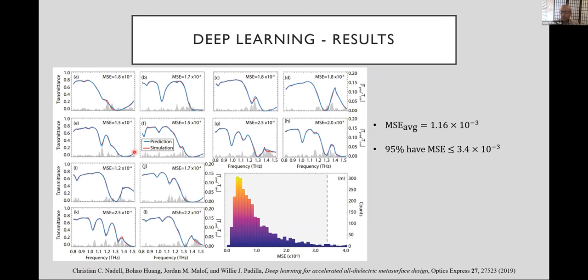Here are some statistics. We find overall that we have an average mean square error between the prediction and the simulation of about 1.16 times 10 to the minus 3. This is transmission. It goes from 0 to 1, and so this is about 0.1 percent, which is quite good. 95 percent of these, which is shown by this dashed vertical curve here, have an MSE less than 3.4 times 10 to the minus 3, also a decent number, and 99 percent of the data have an MSE less than about 0.6 percent. So all in all, quite good in terms of predicting the response, so largely a success.